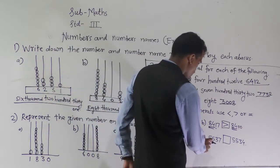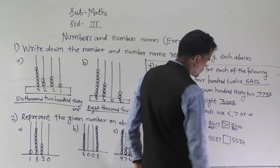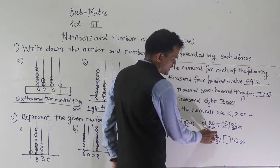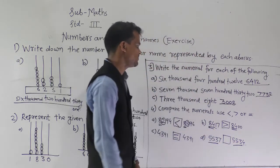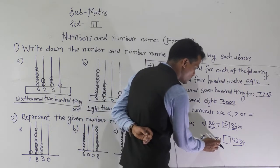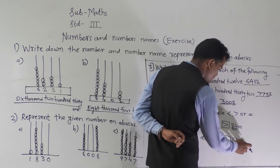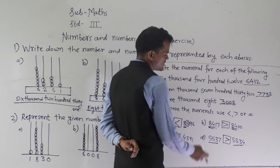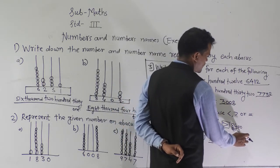Next, compare 5537 and 5534. The thousands, hundreds, and tens place digits are all the same, so compare the ones place digits: 7 and 4. Since 7 is greater than 4, 5537 is greater than 5534.